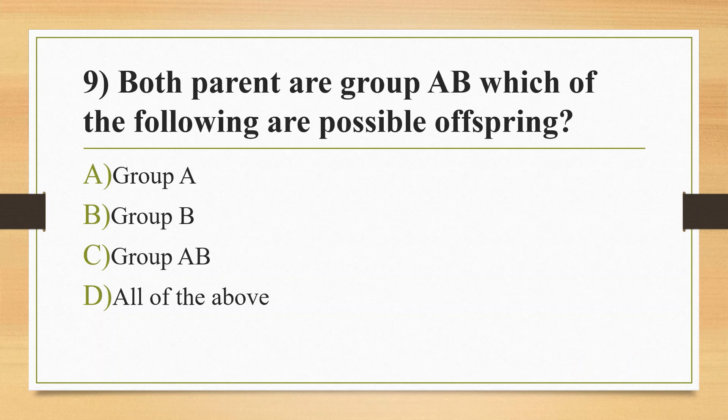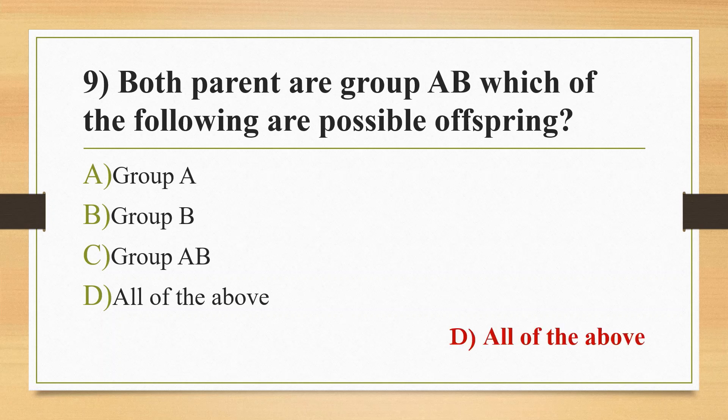Ninth question: both parents are blood group AB — which of the following are possible offspring? Option A: group A. Option B: group B. Option C: group AB. Option D: all of the above. The answer is option D, all of the above. The offspring can be group A, group B, or group AB.